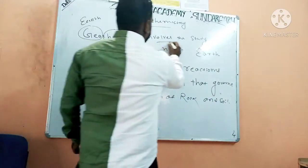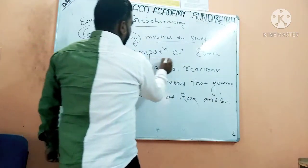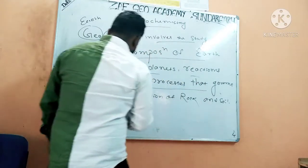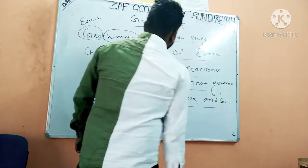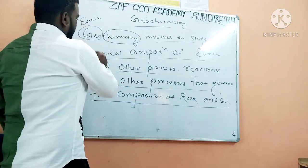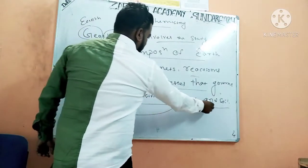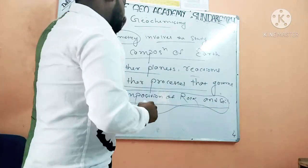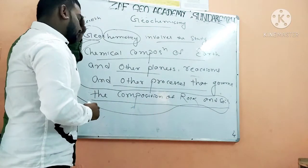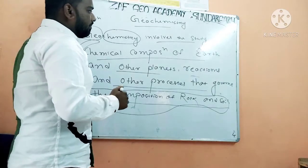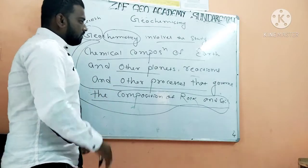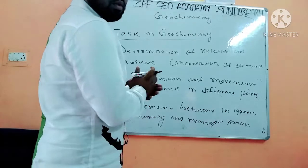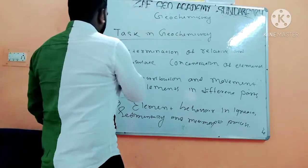Geochemistry involves the study of the chemical composition of Earth and other planets, and the reactions and other processes that govern the composition of rock and soil. Geochemistry will decide what will be the composition of rock and what will be the composition of soil. By the help of geochemistry we can also calculate what is the age of any planet or any rock.